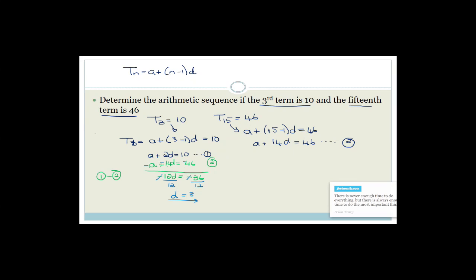We substitute D equals 3 into equation 1: A plus 2 times 3 equals 10, so A equals 10 minus 6, so A equals 4. The arithmetic sequence is 4, 7, 10, 13, etc. And look — the third term is 10. That's correct.